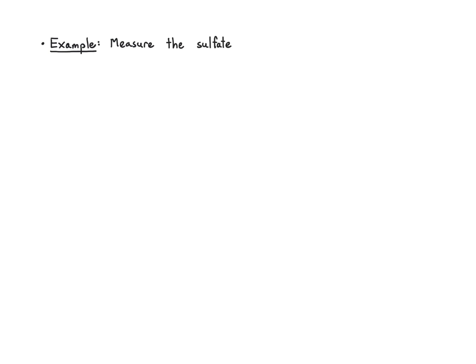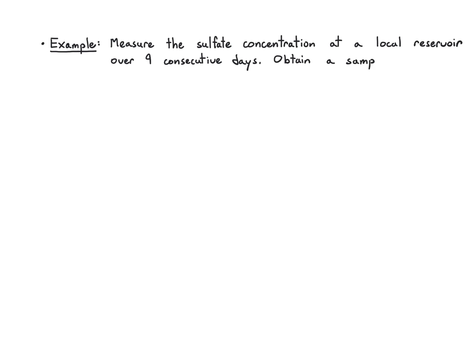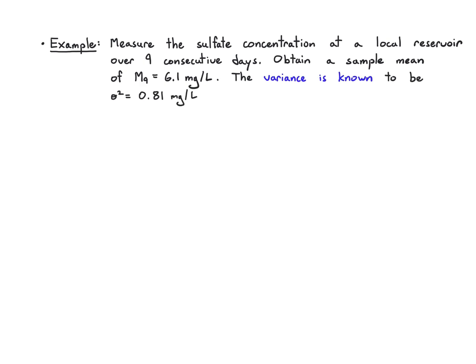Let's work out some examples of significance testing. In our first example, we're going to measure the sulfate concentration at a local reservoir over nine consecutive days. We have nine samples, and over those days we take the sample mean and get 6.1 milligrams per liter. We also know the variance to be 0.81 milligrams per liter squared.